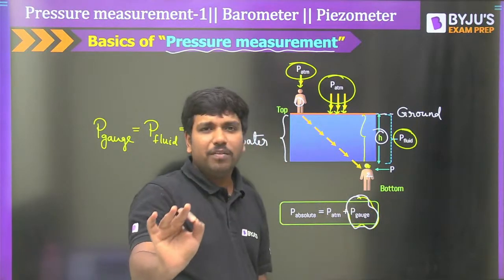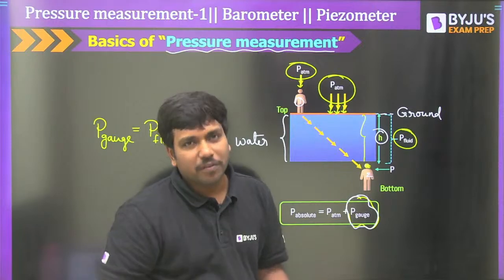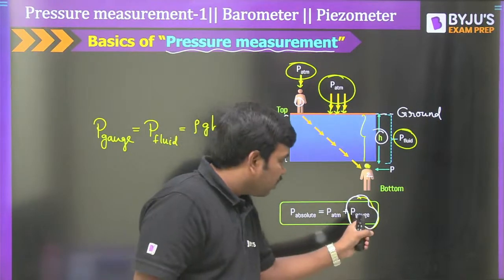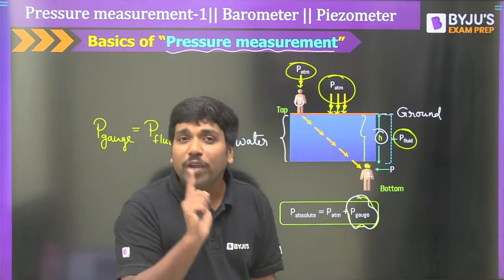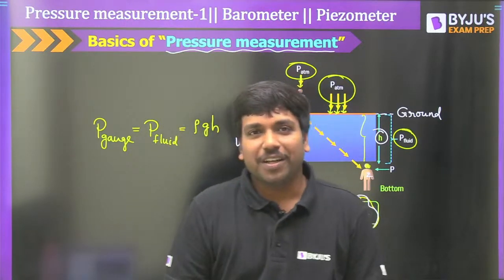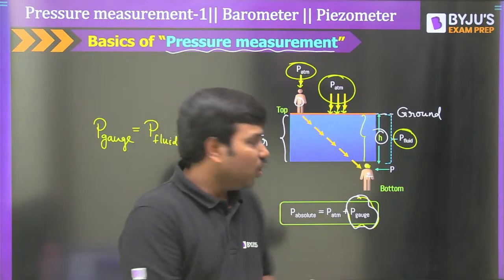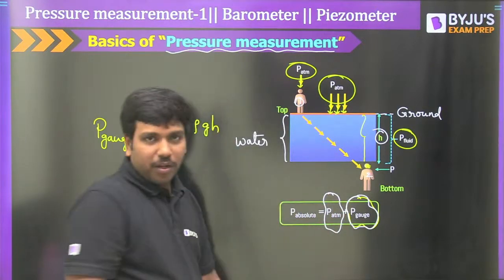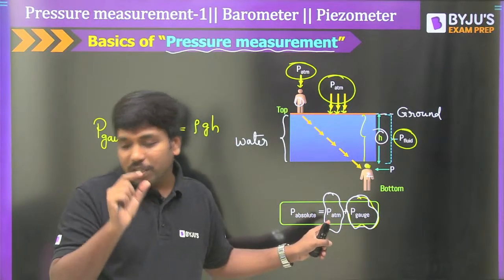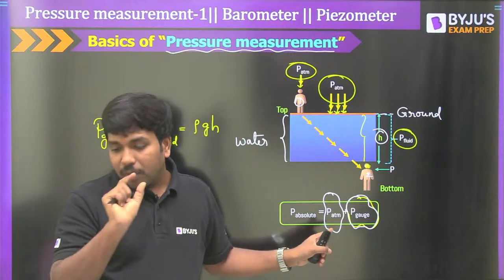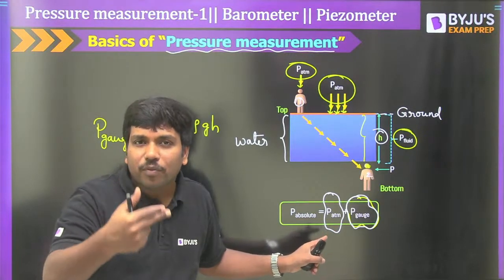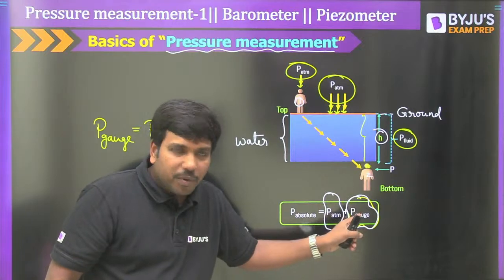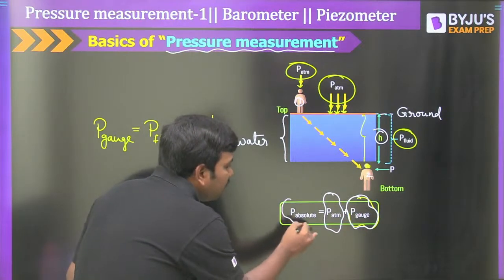There are several sensors to measure gauge pressure — manometer and Bourdon tube are examples. How do we calculate atmospheric pressure? There should be a sensor for that. We use a special device called barometer, which provides atmospheric pressure information. That is added to gauge pressure to get absolute pressure. Additionally, some devices give absolute pressure information directly — I will ask which ones in the next session.